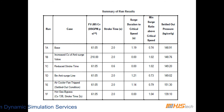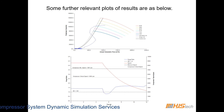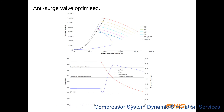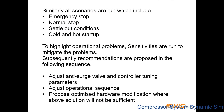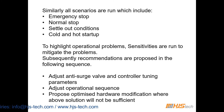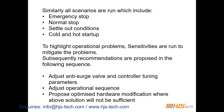Sensitivity runs are performed. Results are plotted — for example, a base case run and a plot for the anti-surge valve optimized scenario. Similarly, all scenarios are run, which include emergency stop, normal stop, settle-out conditions, and cold and hot startup. To highlight operational problems, sensitivity analysis is run to mitigate the problems. Subsequently, recommendations are proposed in the following sequence: adjust anti-surge valve and controller tuning parameters; adjust operational sequence; propose optimized hardware modifications where the above solutions are not sufficient.